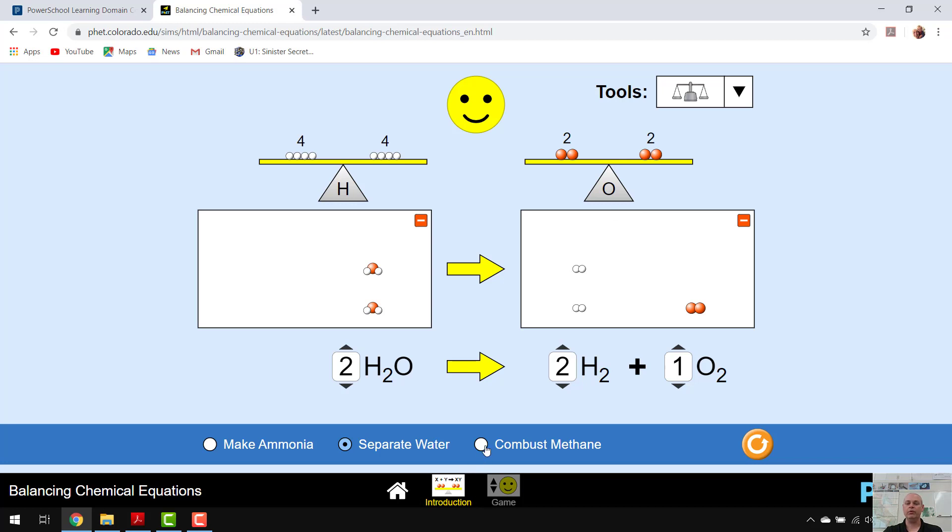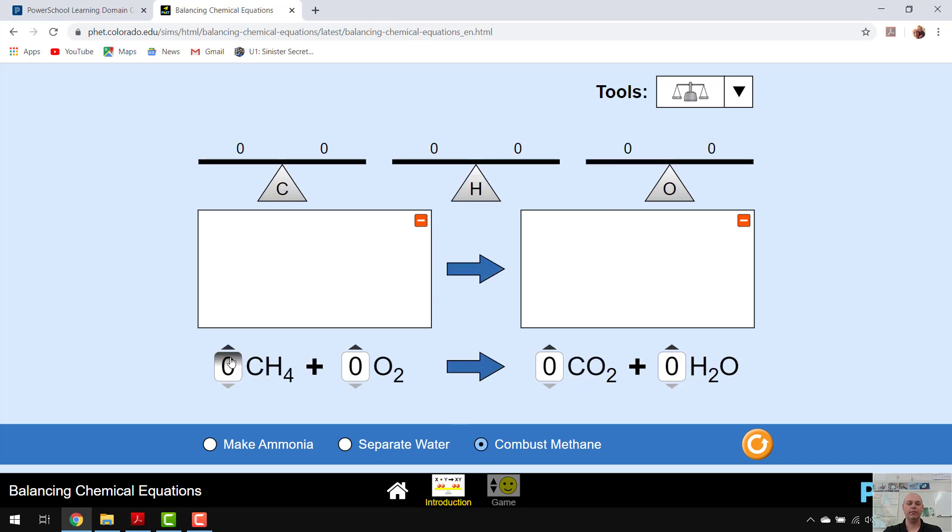We're going to look at one more example. Combust methane. Remember I'm going to start all these at one, at least one mole. Our hydrogens are balanced right off. I mean our carbons are balanced right off the bat. Hydrogens are off. Oxygens are off.